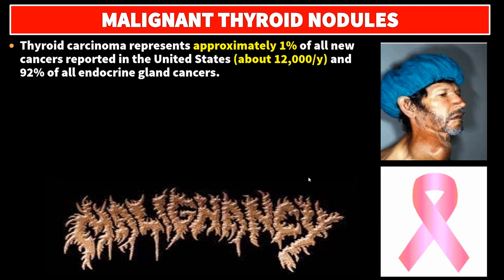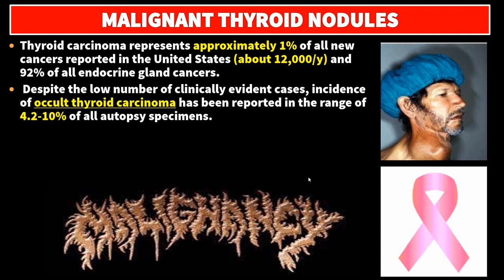Thyroid carcinoma represents approximately 1% of all new cancers reported in the United States, about 12,000 per year, and 92% of all endocrine gland cancers. Despite the low number of clinically evident cases, incidence of occult thyroid carcinoma has been reported in the range of 4.2 to 10% of all autopsy specimens.